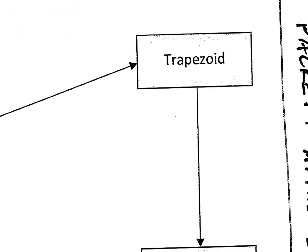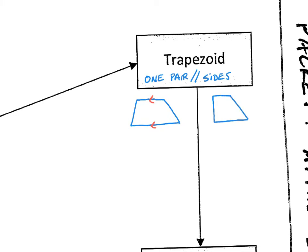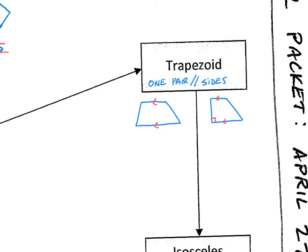A trapezoid has one pair of parallel sides. For example, you could draw it so that the top and bottom are parallel, or you could even draw a right trapezoid with a right angle on one side. There's not a whole lot of symmetry in a general trapezoid.